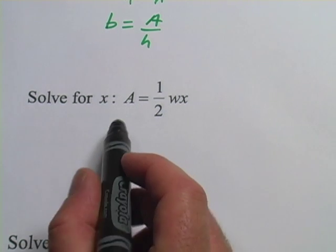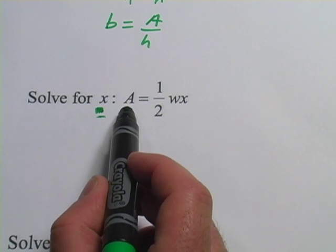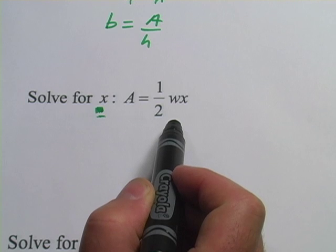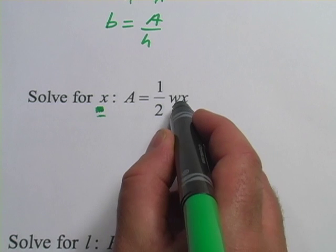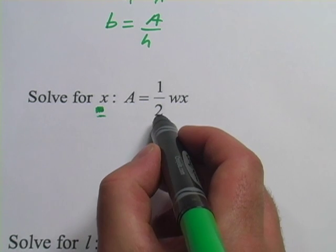Slightly more complex. We're going to solve for X here, and this we have A equals 1 half W times X. Sort of looks like the formula for the area of a triangle if W was the base and X was the height. So since we're solving for X, we've actually got two things going on here.